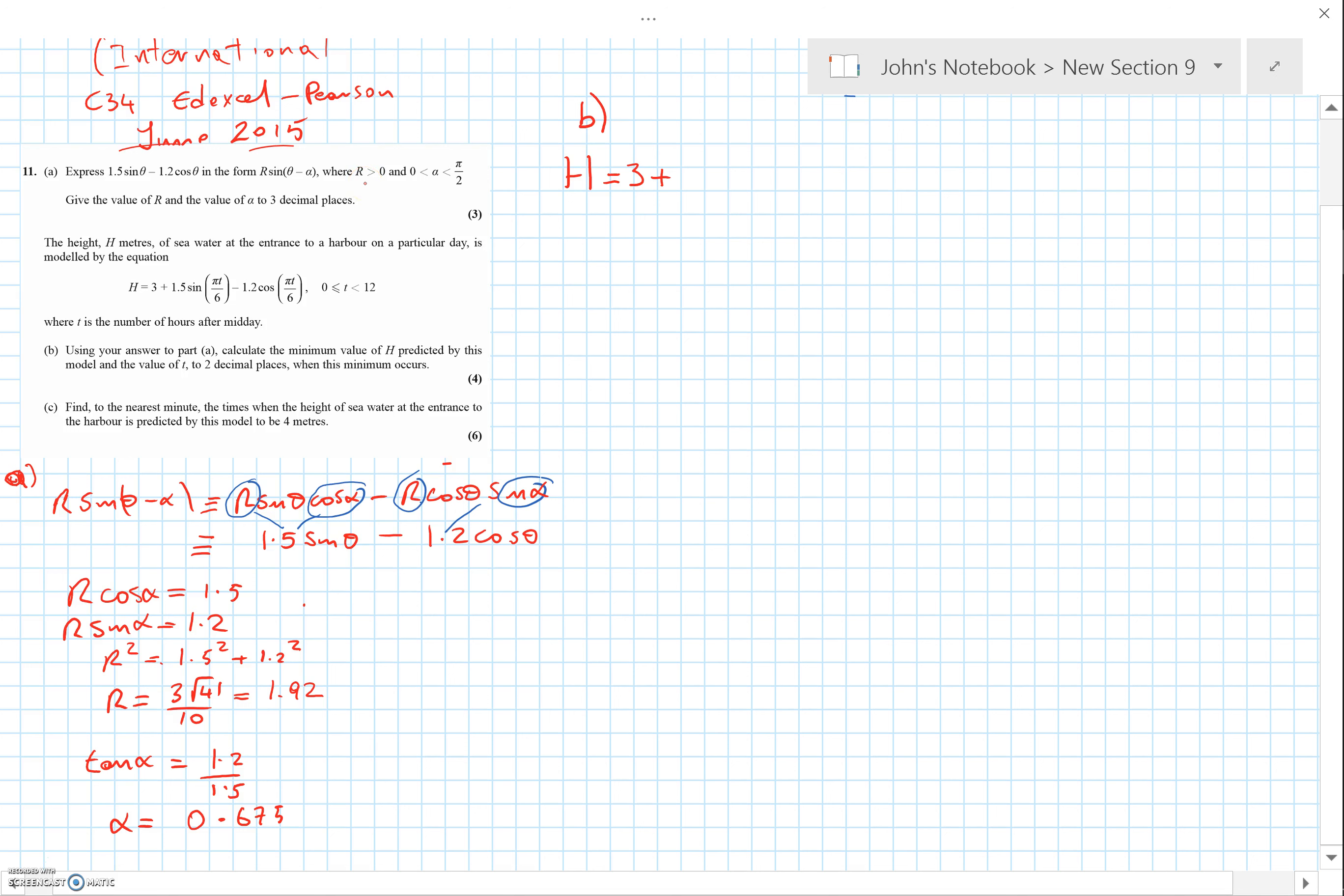Obviously it's slightly different, we've got 3 at the front, but the numbers 1.5 and 1.2 are the same. So the value of R at the front is going to be the same. I'll write the exact value here: 3√41/10, and then that is sin of π/6 T minus the value of α.